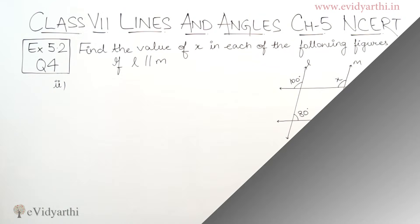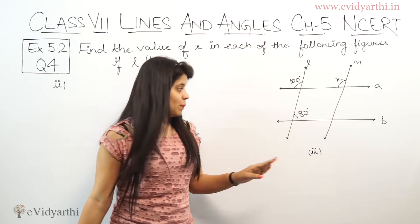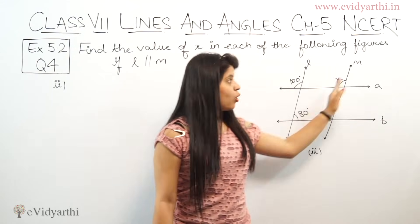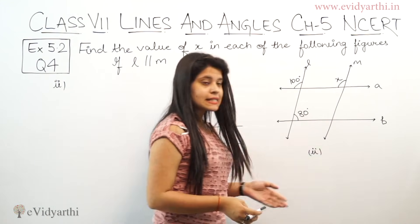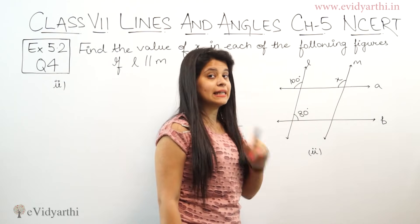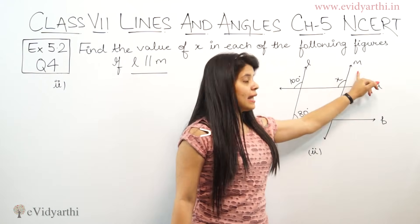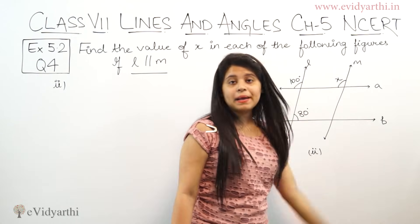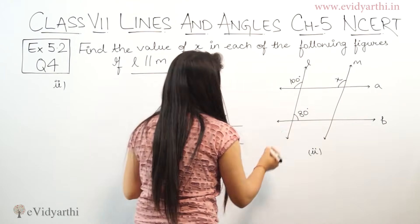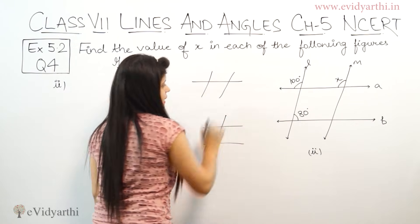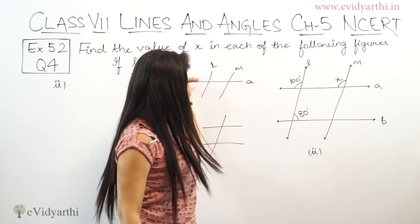Now let's come to the next part — the second part. In this figure, most students get confused because two parallel lines appear here, and L and M are parallel lines. What we can do is: A and B are parallel lines and it is a transversal. But the question states that L is parallel to M. So L and M are the parallel lines, and A and B are the transversals. The angle given is 80 degrees.